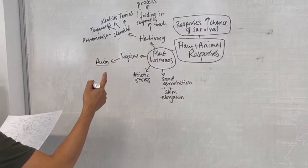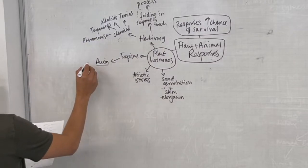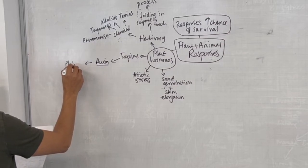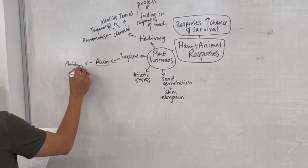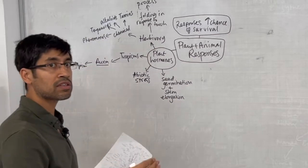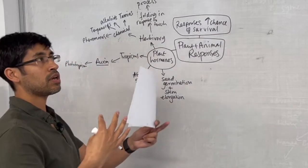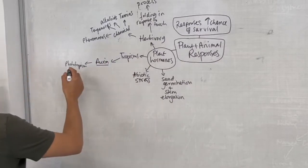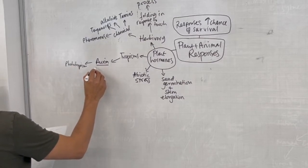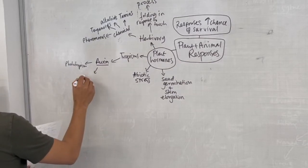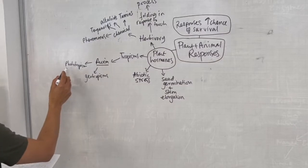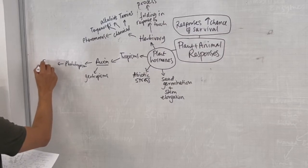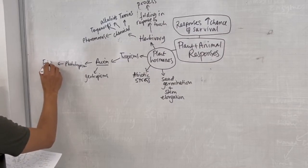What kinds of tropisms can auxin be involved in? We've got responses to the direction of light, so phototropism, allowing the plant to grow in the direction of light to maximize its exposure to higher light intensity and greater photosynthesis for its survival. We also have geotropism or gravitropism.